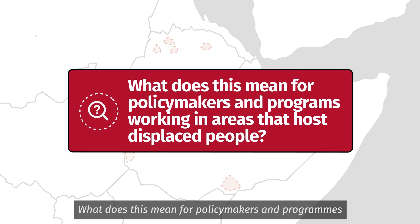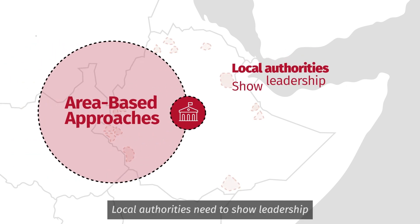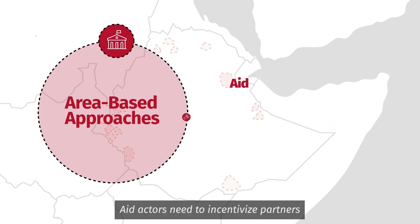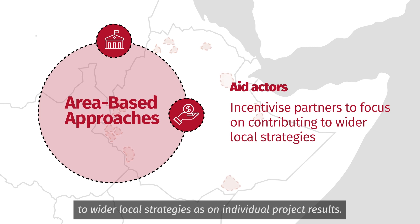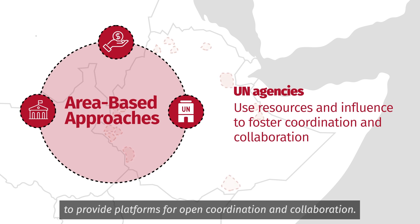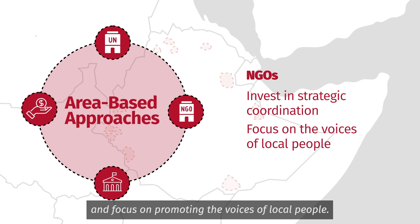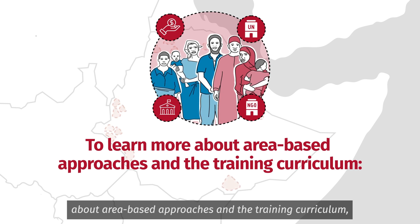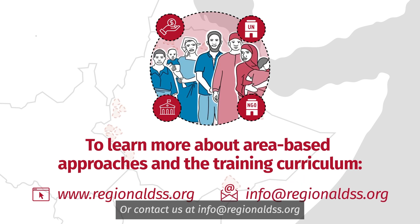What does this mean for policy makers and programs working in areas that host displaced people? Local authorities need to show leadership and a willingness to engage and coordinate with both central government and aid actors working in their locations. Aid actors need to incentivize partners to focus as much on their contributions to wider local strategies as on individual project results. UN agencies need to use their resources and influence to provide platforms for open coordination and collaboration. NGOs need to invest in strategic coordination as much as delivery and focus on promoting the voices of local people. To learn more about area-based approaches and the training curriculum, visit www.regionaldss.org or contact us at info@regionaldss.org.